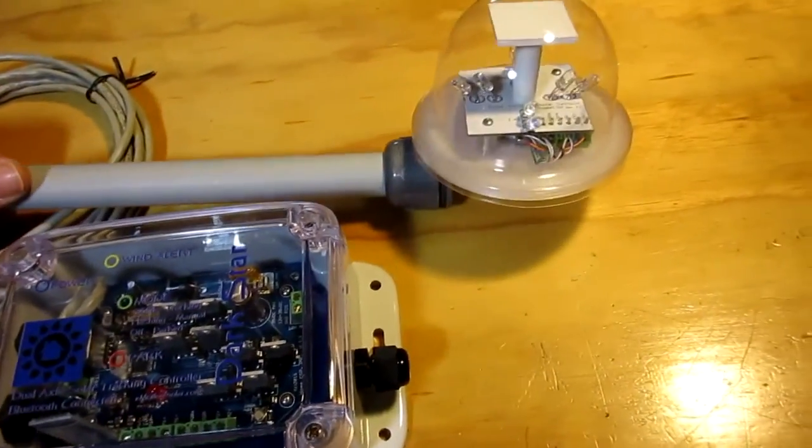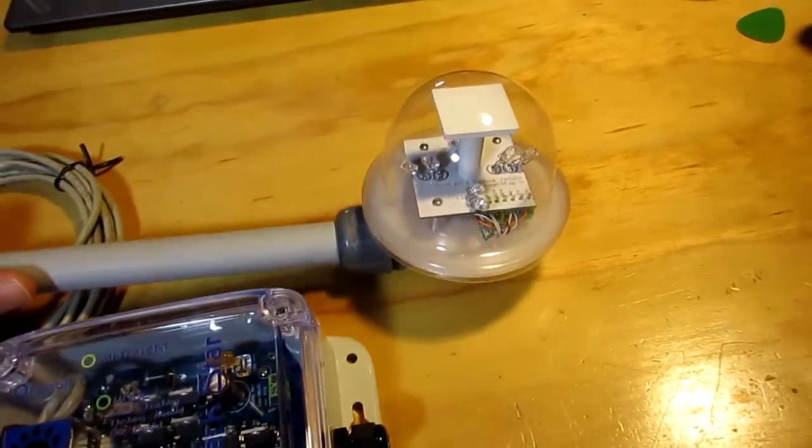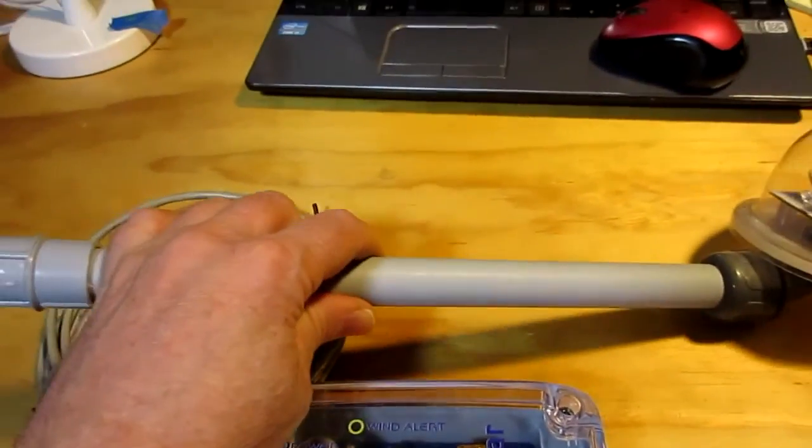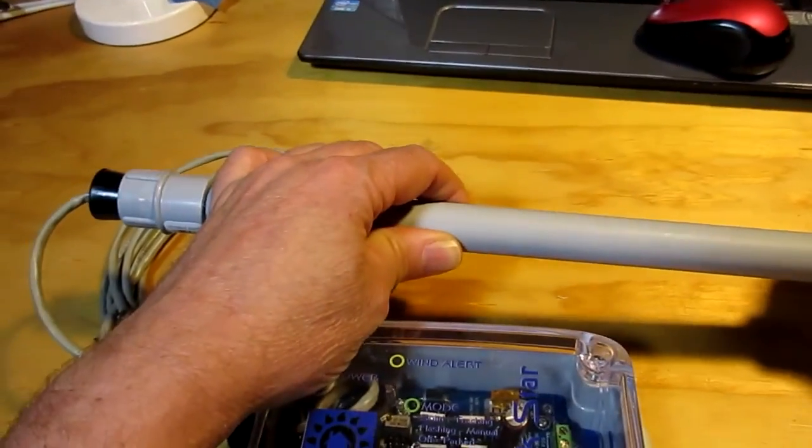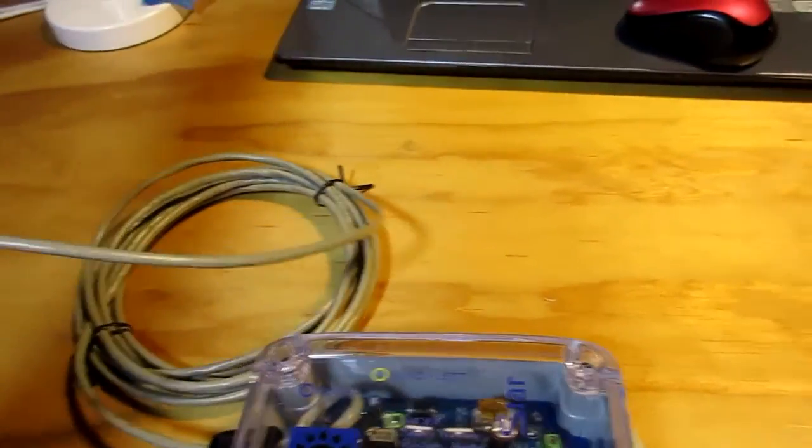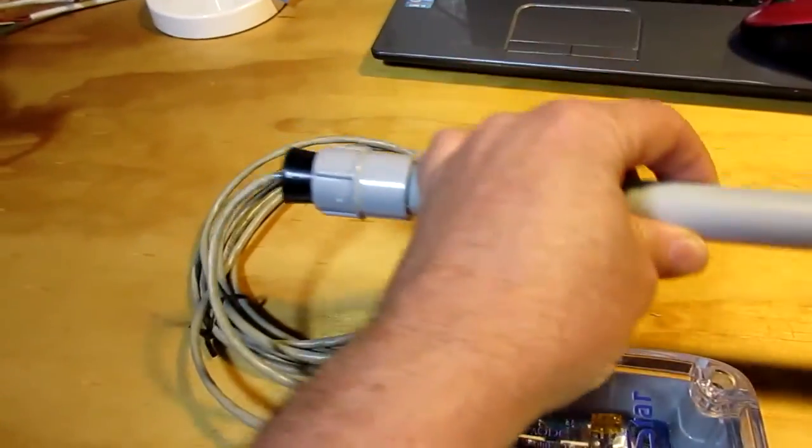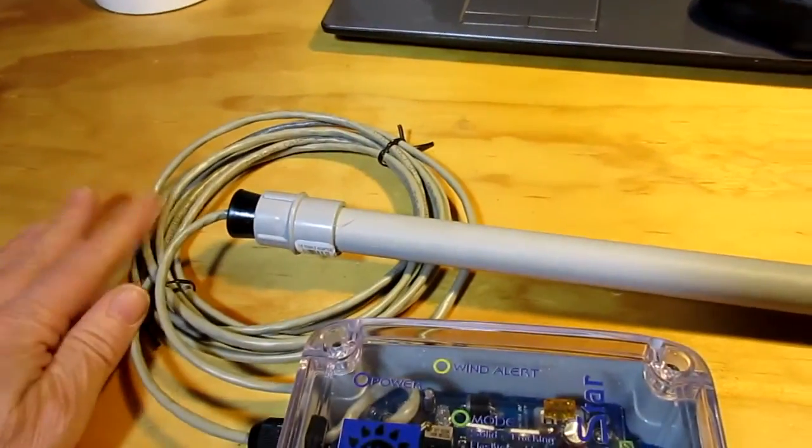You can see the remote sensor. It's got a one-foot tube that mounts on, with about twelve foot of cable here, four meters of cable.